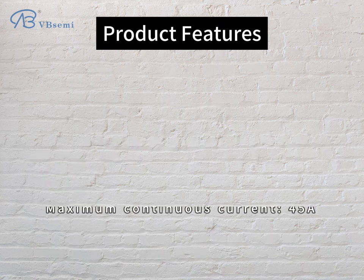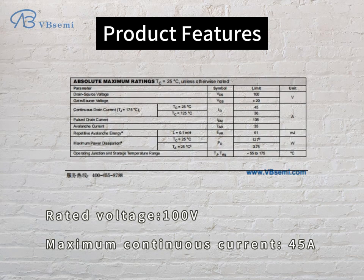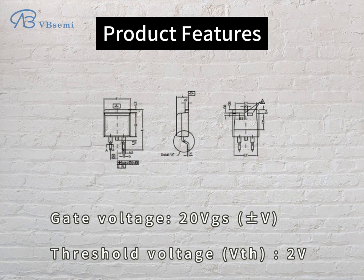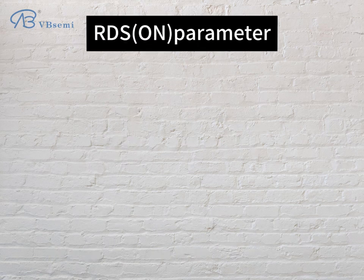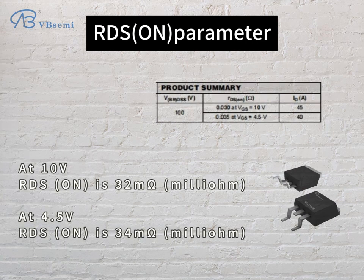Product features: rated voltage 100V, maximum continuous current 45A, gate voltage 20V (VGS), threshold voltage VTH 2V. RDS(on) parameter: at 10V, RDS(on) is 32mΩ; at 4.5V, RDS(on) is 34mΩ.